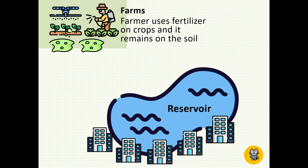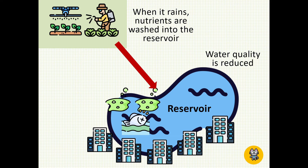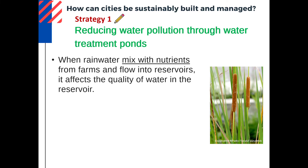Let me show you an example. In cities, sometimes you have small farms where farmers spray fertilizer — chemicals that stay on the soil. When it rains, the fertilizer flows into the reservoir, reducing water quality. This fertilizer contaminates or pollutes our water body, making it unsafe to drink, and aquatic animals may also die because the water is polluted. So how do we solve this problem? I want you to write 'Strategy 1' above the title 'Reducing water pollution through water treatment ponds' — this is the first strategy we'll be exploring.